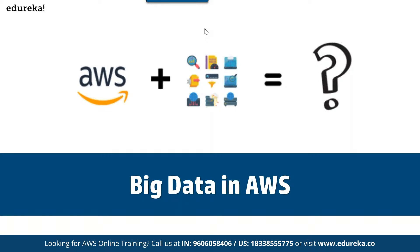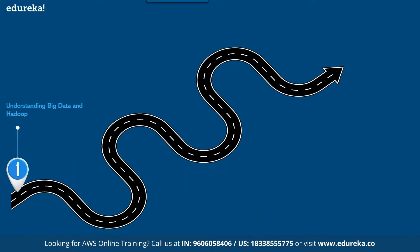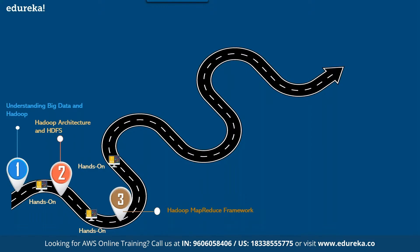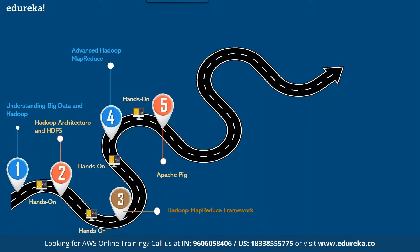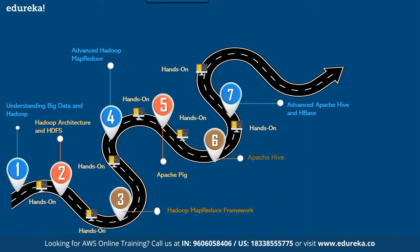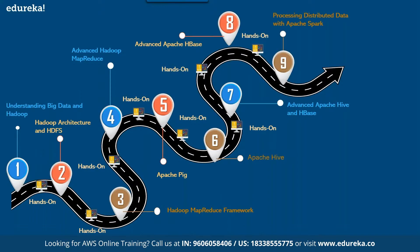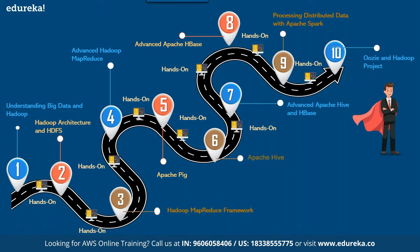If you're interested in the structured learning course, here's how it proceeds: Class 1 covers big data and Hadoop with hands-on. Class 2 covers Hadoop architecture and HDFS. Class 3 covers the Hadoop MapReduce framework. Class 4 covers advanced Hadoop MapReduce and its core components. Class 5 covers Apache Pig. Class 6 covers Apache Hive. Class 7 covers advanced Apache Hive and HBase. Class 8 covers advanced Apache HBase. Class 9 covers distributed data processing with Apache Spark. Class 10 covers Oozie and a Hadoop project — all with hands-on.